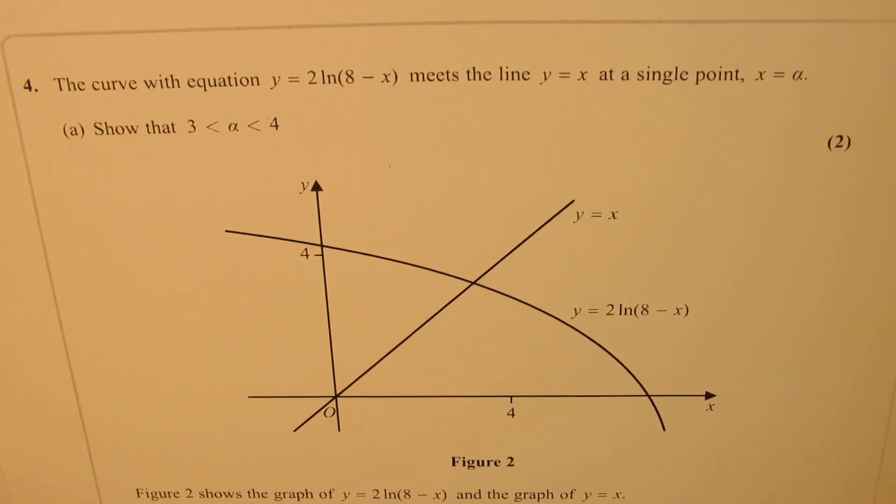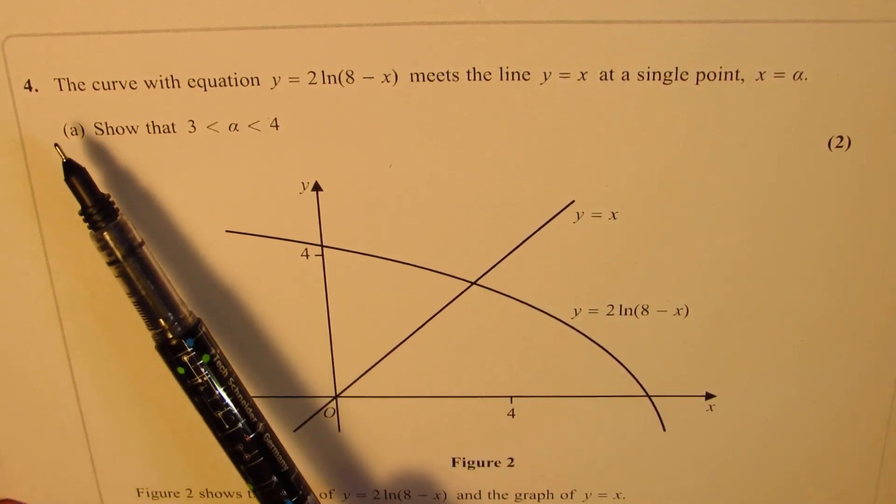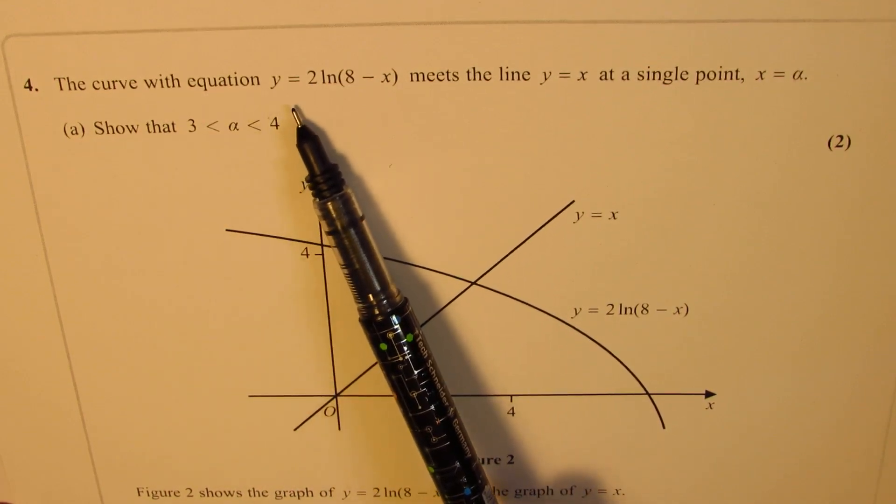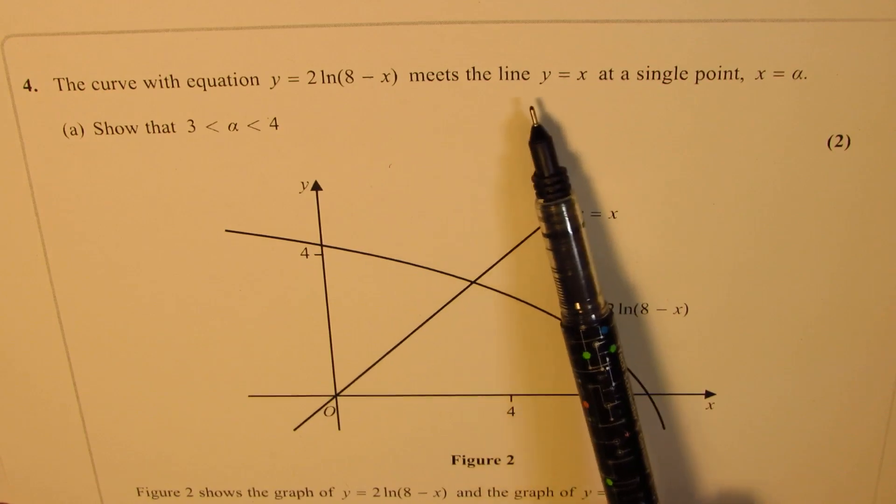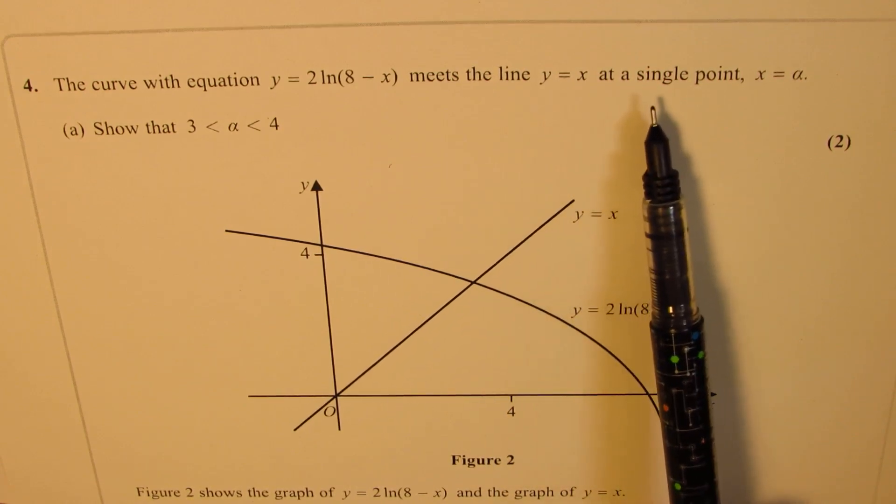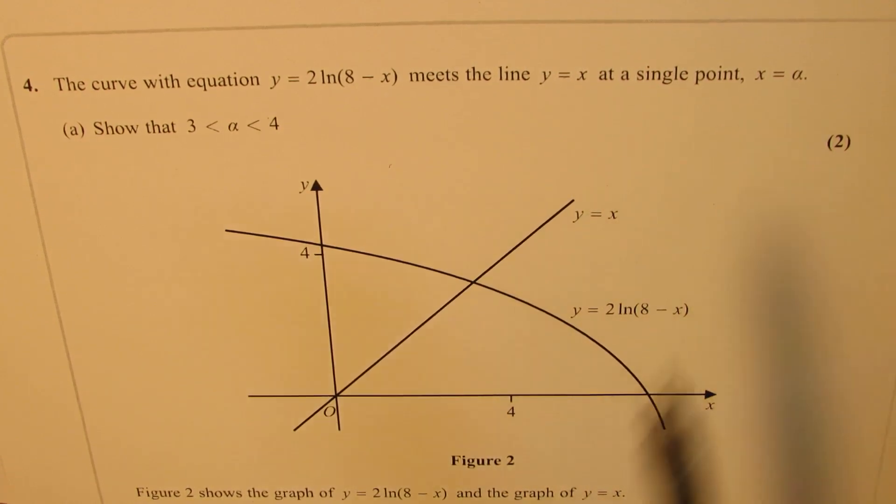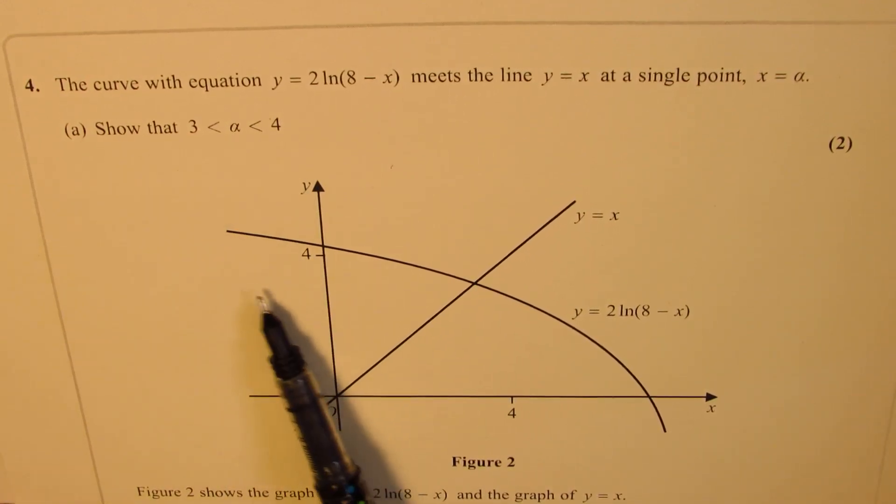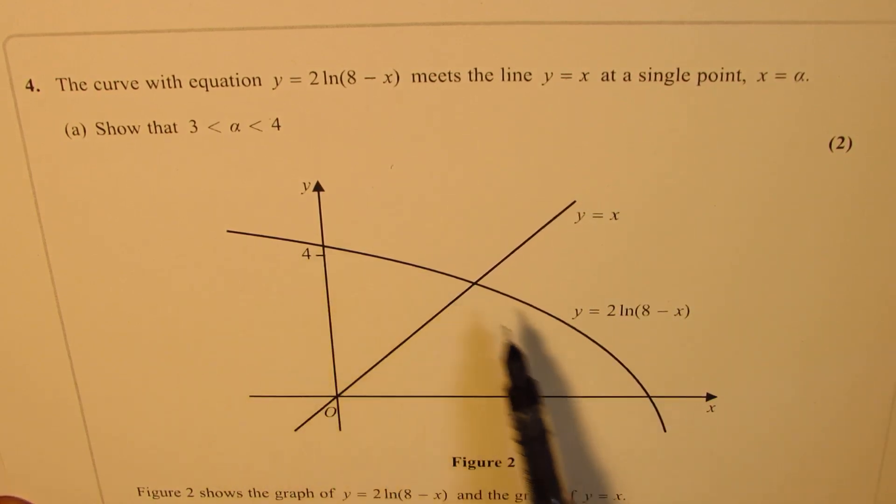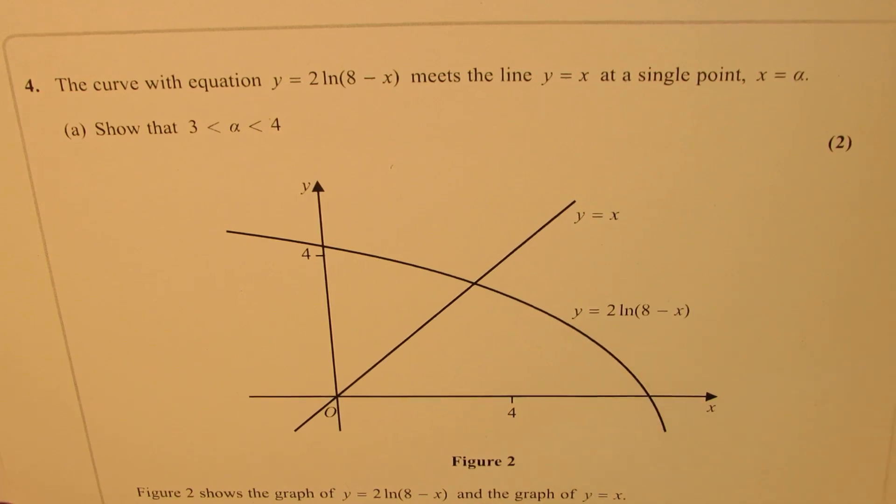Question four: here is the curve with the equation y equals 2 ln(8 - x) meets the line y equals x at a single point x equals alpha. Show that alpha is between 3 and 4. Now here's a graph also given to you, that's the line y equals x and that's the curve y equals 2 ln(8 - x).